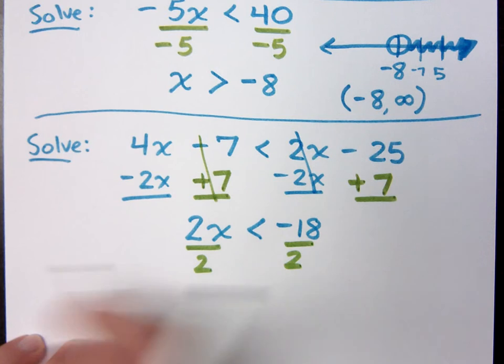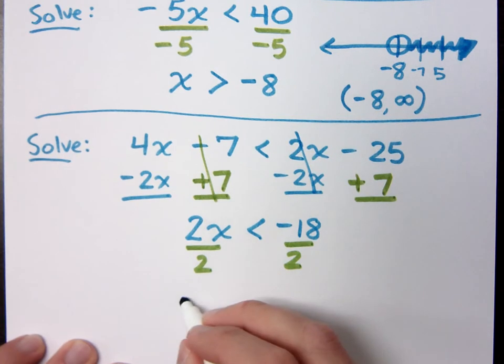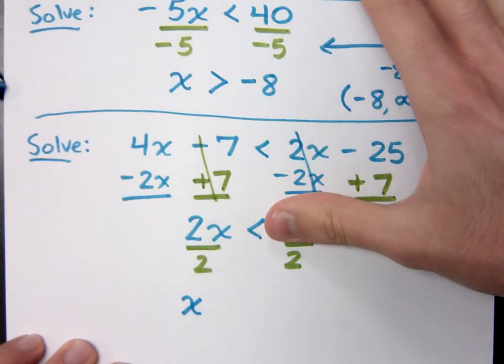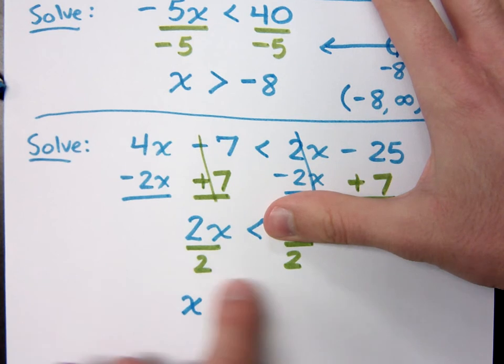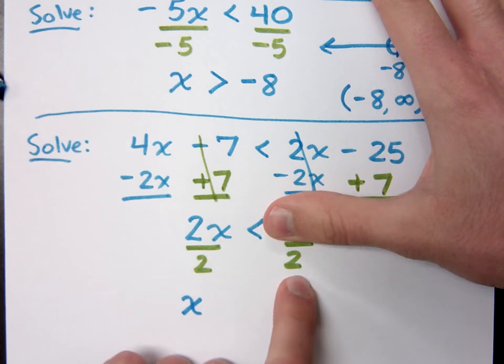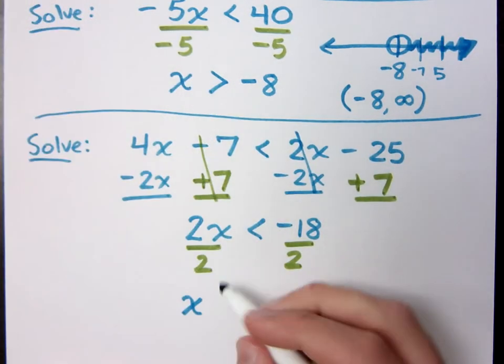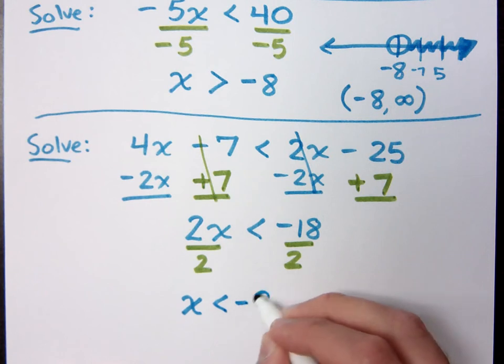Does my inequality symbol change directions? Yes or no? No. If I've got a negative, I'm not dividing by the negative, am I? No. See, it doesn't matter what this number is right here. What am I dividing by? A positive. So that rule doesn't come up. We don't have to change the direction of inequality. So it stays as x is less than what? Negative 9.